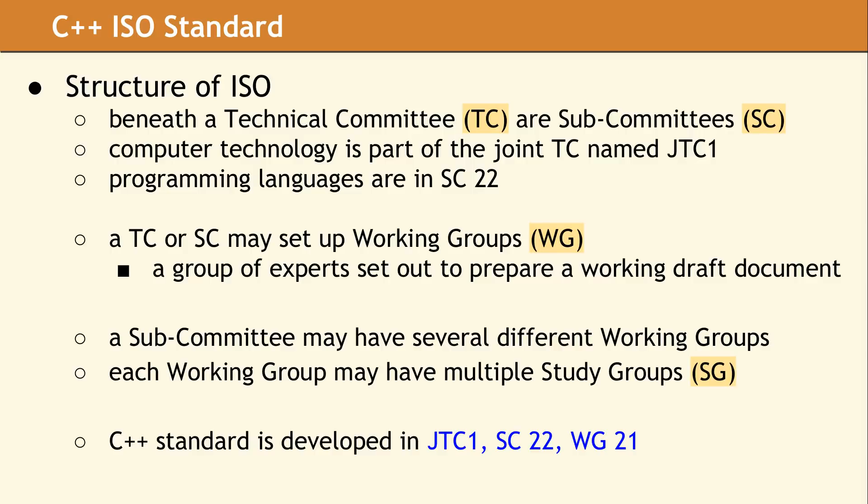There are numerous subcommittees in JTC1, such as Subcommittee 6, which handles telecommunications, and Subcommittee 42 for artificial intelligence. Each subcommittee can set up multiple working groups to address a particular standard. A working group can set up various study groups to refine some particular aspect of their standard.